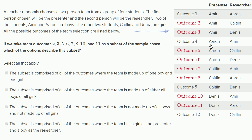Outcomes four through six have Aaron as the presenter, and then you have the other three people being the researcher. Then you see all the situations for Caitlin — Caitlin with Amir, Caitlin with Aaron, Caitlin with Denise. And then you have all the situations where Denise is the presenter: Denise presenter with Amir researcher, Denise presenter with Aaron researcher, Denise presenter with Caitlin researcher.